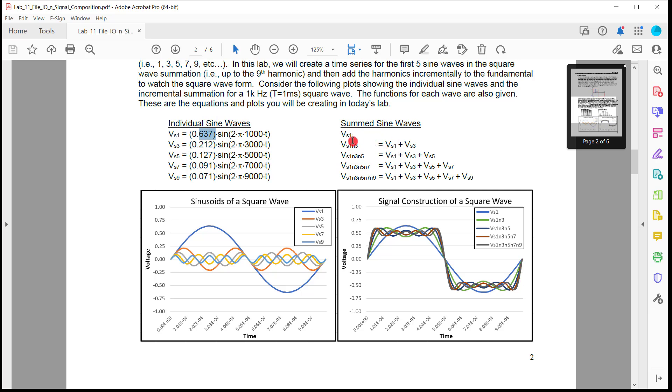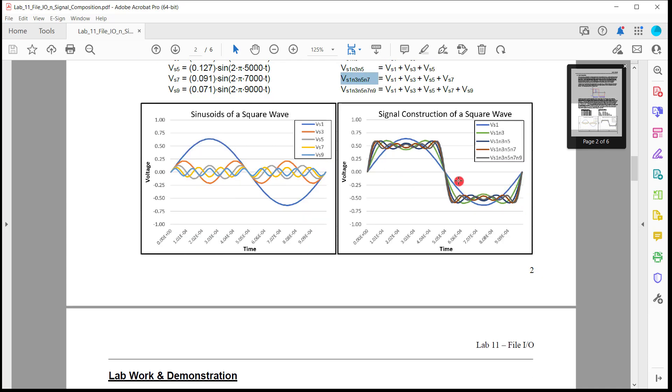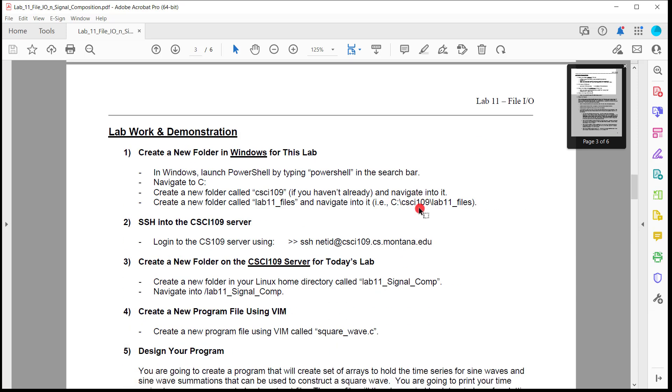You're going to have arrays for each of these time series that go between zero to one millisecond. And you're going to apply a frequency scaling factor and an amplitude scaling factor. And you're going to create all these different array variables. Then you are going to, in C, add them together and form all these different arrays where you'll have VS1 is just the original. VS1N1, N stands for and, would be VS1 plus VS3. And then VS1N3N5 will be the summation of these. And then you'll have one that's the summation of 1, 3, 5, 7, and then 1, 3, 5, 7, and 9.